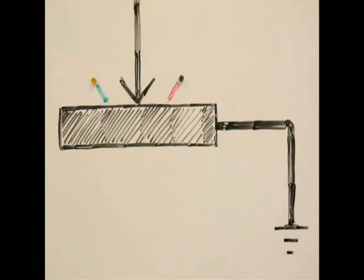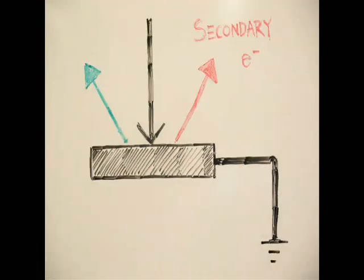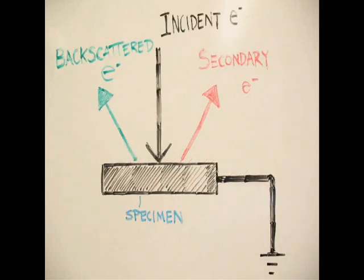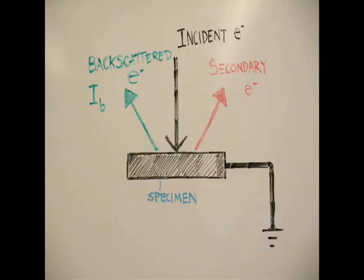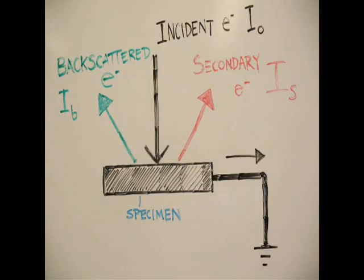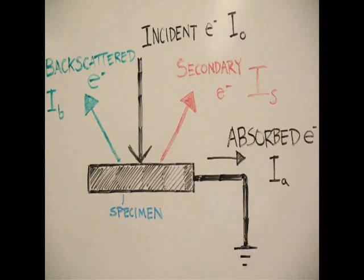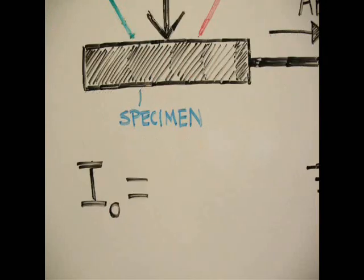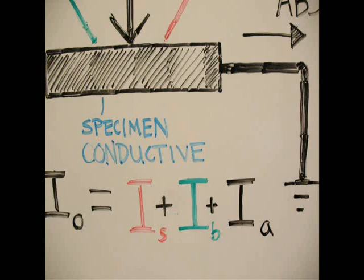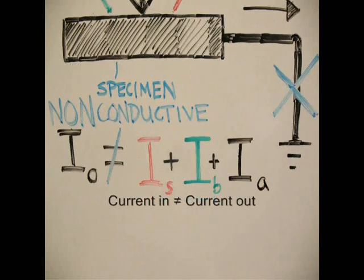Current in must equal current out. This occurs when the specimen is grounded via a conductive path. A conductive path can be provided by a sputtered coat or copper tape. When the specimen is non-conductive, electrons cannot escape and build up in the specimen, which can overexpose the image.